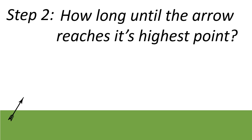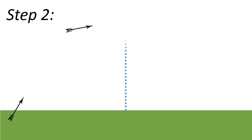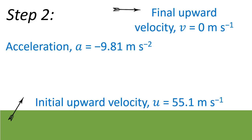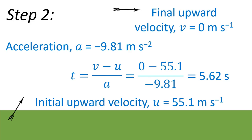Next question: how long until the arrow reaches its highest point? This is the arrow going up, but we just want to think about its motion in the vertical axis. We know the initial upward velocity is 55.1 meters per second, and at its highest point the arrow will be stationary, so the final velocity will be 0 meters per second. Acceleration due to gravity is minus 9.81, negative because it's causing a deceleration of the arrow. If we put these into the SUVAT equation, we can work out the time: 5.62 seconds for the arrow to reach its highest point.